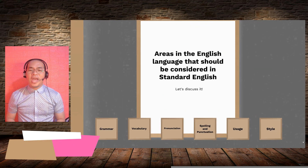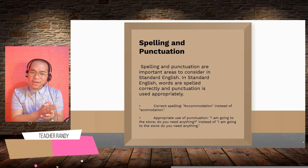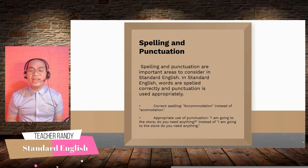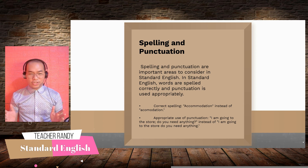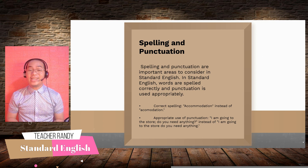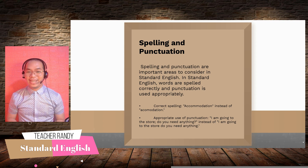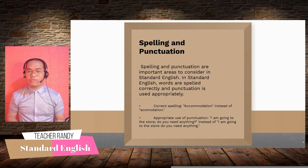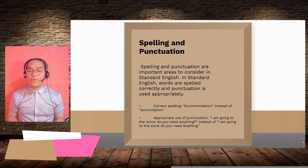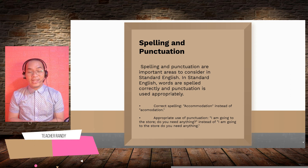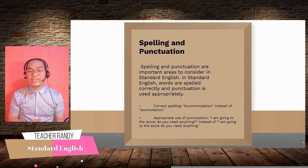Spelling and punctuation are very important areas to consider in Standard English. Words are spelled correctly and punctuation is used appropriately, which helps to ensure that communication is clear and effective. For example, the spelling of 'accommodation' should have two Cs and two Ms: A-C-C-O-M-M-O-D-A-T-I-O-N. For appropriate use of punctuation, we say: 'I am going to the store; do you need anything?' instead of two separate sentences without the semicolon.